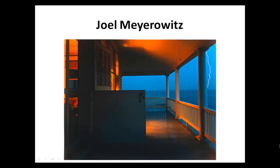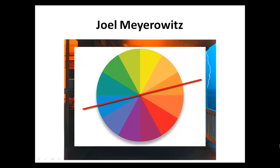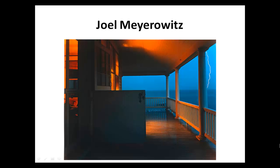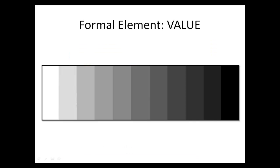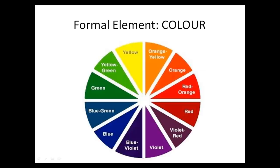Joel Meyerowitz was an artist who was one of the first to really champion color photography. In his images of everyday life, he shows the beauty of things such as this porch where we have the complementary colors — orange and blue — creating a wonderful visual vibrancy. If this image was in black and white, it wouldn't have as much of an effect on us. So instead of focusing on value as the more traditional photographers had to, Meyerowitz was able to play around with the color wheel and introduce more of a reality.